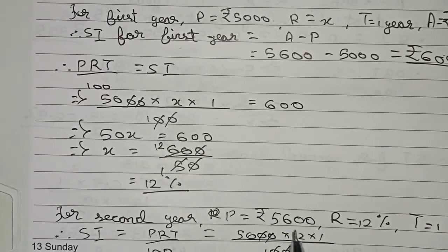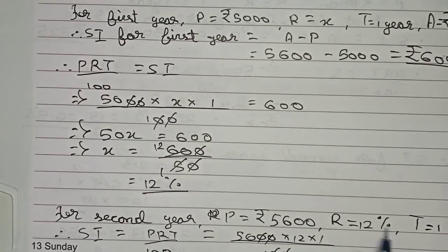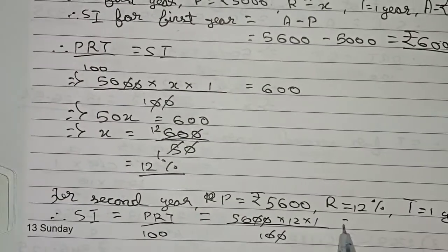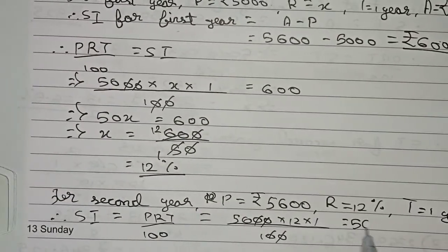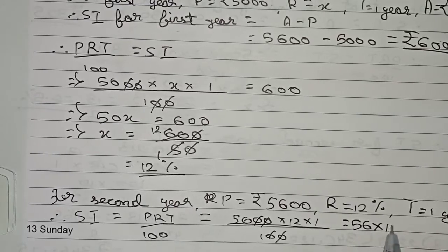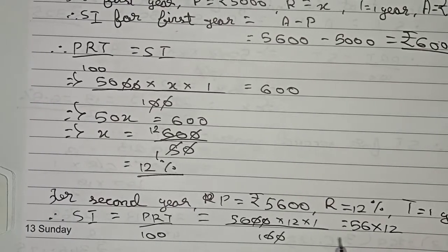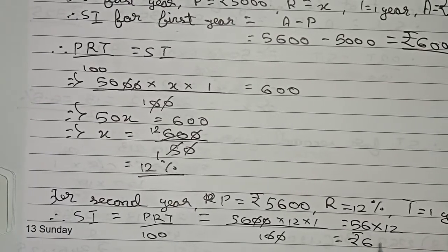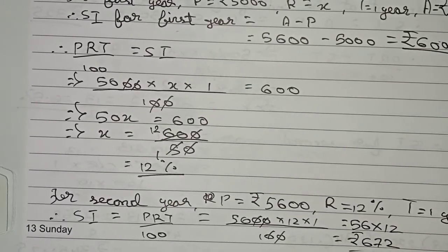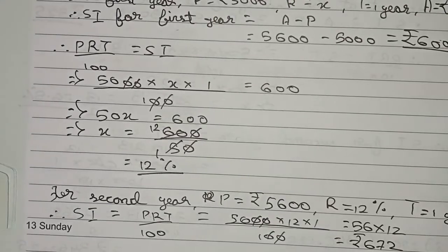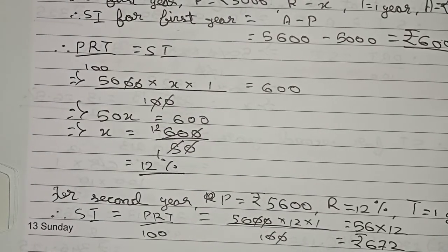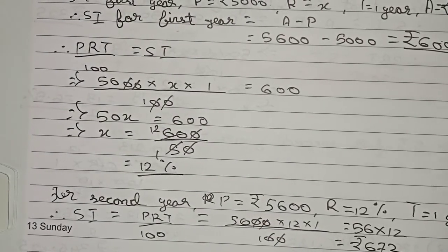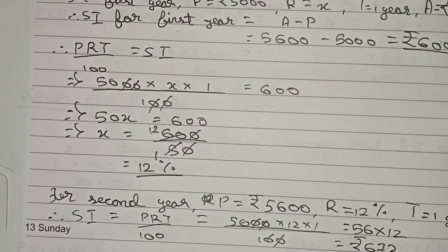After cutting the zeros, we get 56 into 12. So the SI for the second year equals rupees 672.